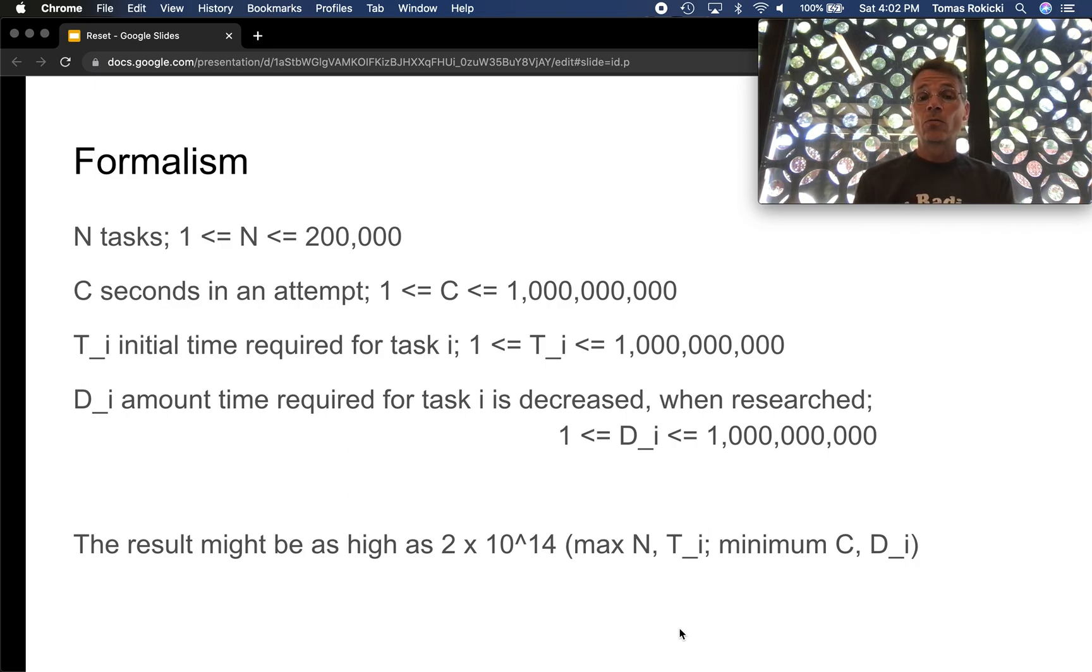And the amount of time required for each task that's decreased every time you research it is D_i, and that ranges from one to a billion. In particular, note that D_i is one or greater, so doing research will always decrease the time required for a task. The final result might be as high as 2 times 10 to the 14th. This happens when we maximize n and the T_i's and when we minimize C and the D_i's. So we need to use long longs here.